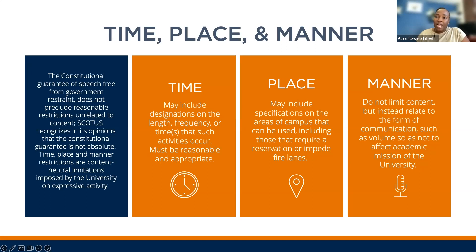The last element used to determine the appropriateness of free speech activities is manner. It doesn't limit content, but instead relates to the form of communication — for instance, the volume. We cannot affect or disrupt the academic mission of the university, which is why amplified sound is only permitted between 12 and 1. We've also identified additional mitigation measures to not disrupt the academic mission, which I'll address in the next slide.